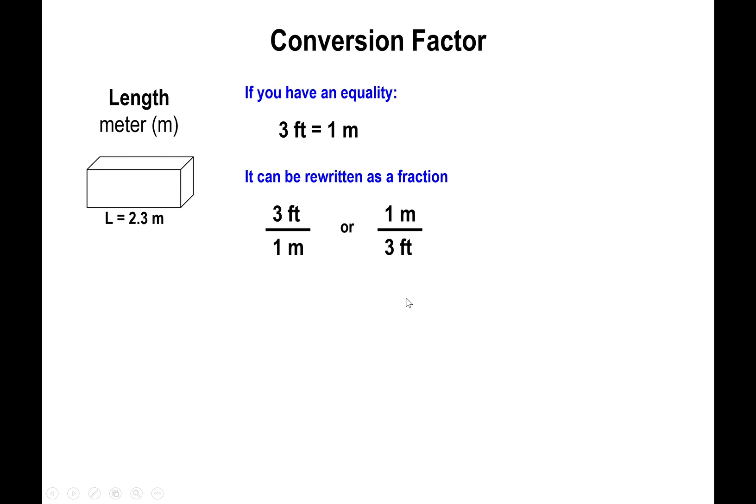Which individual conversion factor you get to use depends on the original number you're given. In this case, let's say I tell you that the block has a length of 2.3 meters, and I want to know how many feet that corresponds to. What you have to do is start with the number you've been given, the 2.3 meters. Here's where the fractions come in. Select the fraction that has the unit you start with on the denominator, so you want to use the left fraction here and multiply it to the original number.